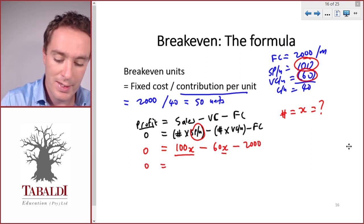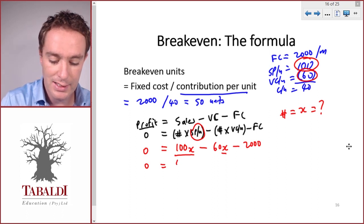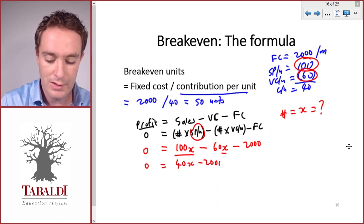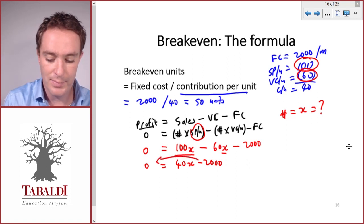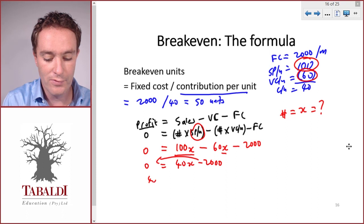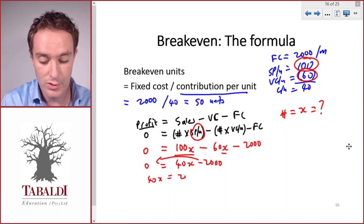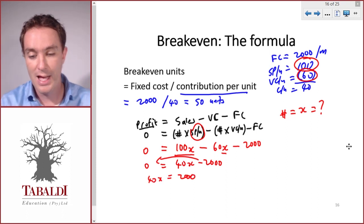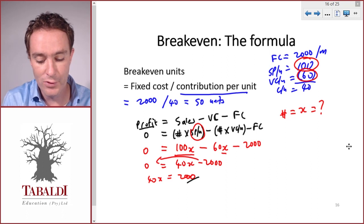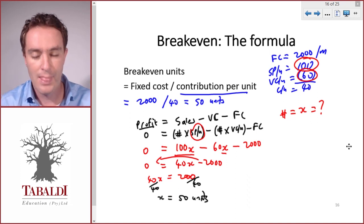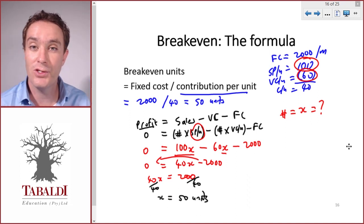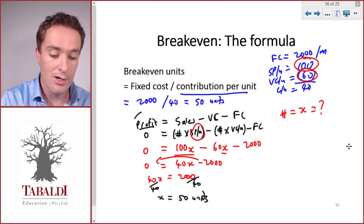That becomes 100X minus 60X gives us 40X minus 2000. We'll carry over the 2000, it becomes positive. So we've got 40X equals 2000. We can divide by 40 on either side of the equation sign, and X becomes 50 units. So our breakeven point is 50 units and we'll make a zero profit.